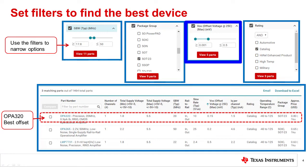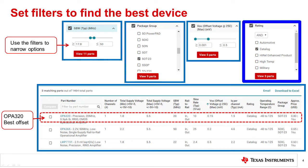DC performance is also important, so we limit the offset to be less than 0.5 mV. And then we need to select results. Finally, we limit the rating to be catalog devices only.